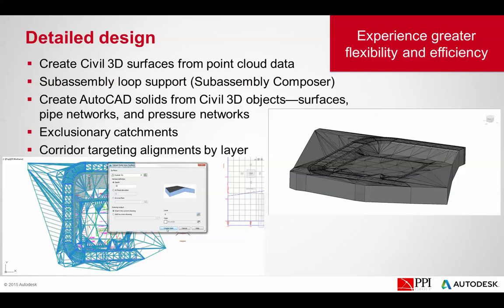Under detail design, we can create Civil 3D surfaces from point clouds. We also have new sub-assembly loop support within the sub-assembly composer — so if you're doing benching inside a sub-assembly, you can specify a loop rather than defining each individual bench. We can create Civil 3D solids from surfaces, pipe networks, and pressure networks. There are enhancements to catchments including exclusionary catchments, and they've added the ability to target alignments by layer.